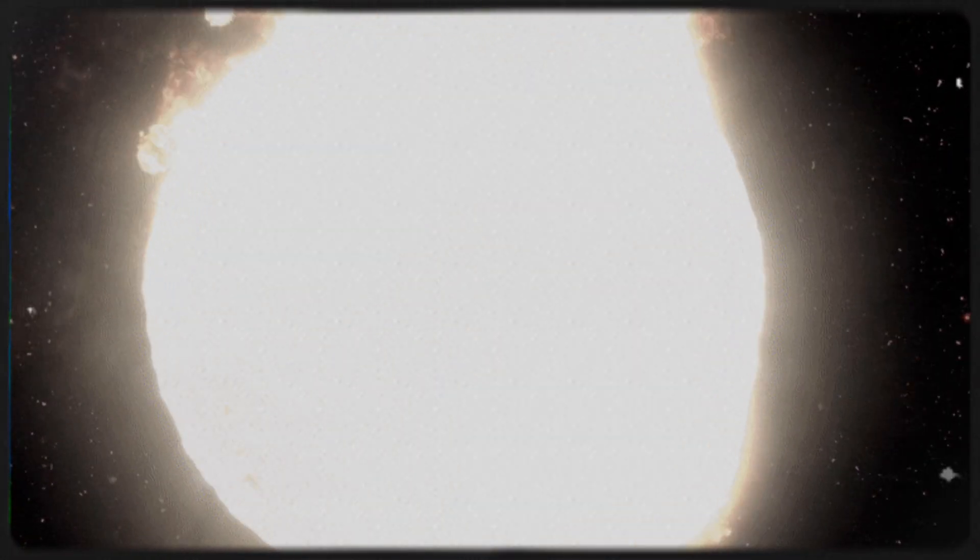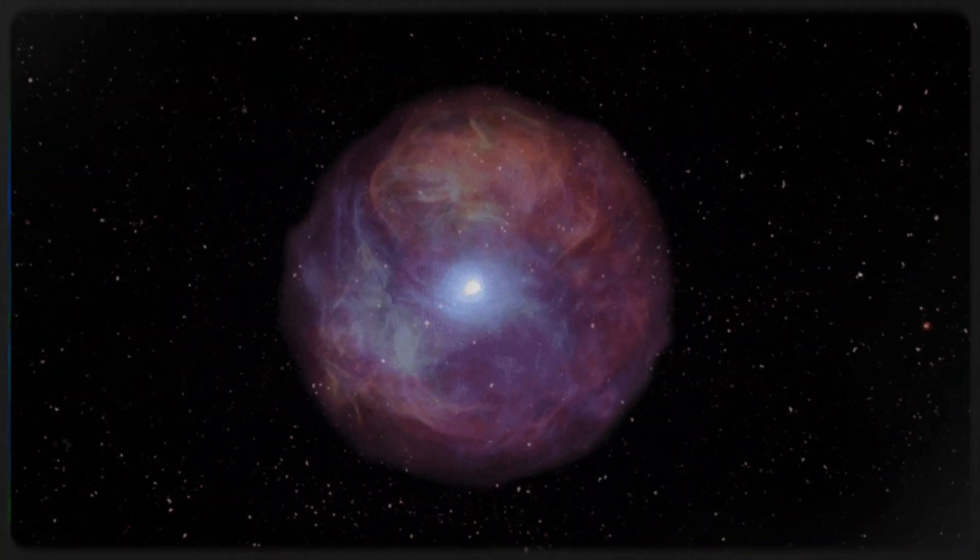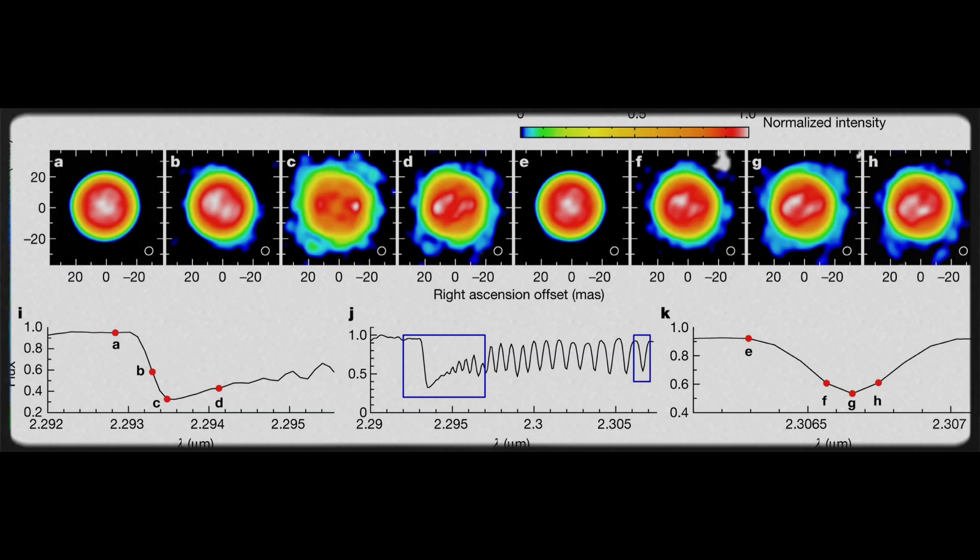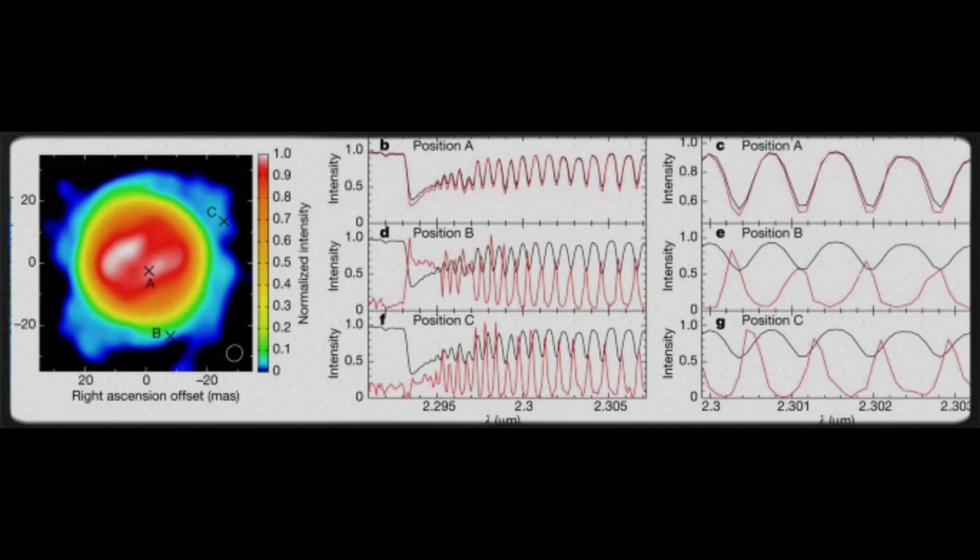Red supergiants like Betelgeuse are generally believed to lose mass at a steady pace before they explode in their final moments. But the sheer scale of this mass ejection challenges that idea, hinting that these stars might experience a much more chaotic and unpredictable phase as they near the end of their lives.